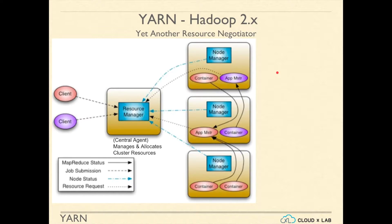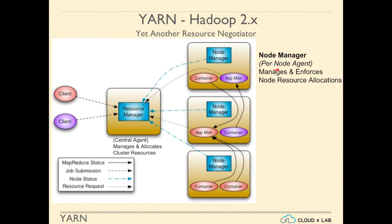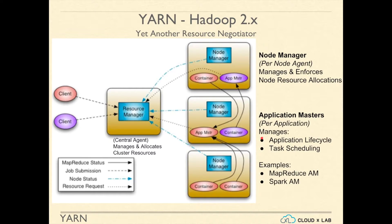Let's try to understand the architecture of YARN. The objective of YARN is to be able to execute any kind of workload in a distributed fashion. All of the components that you see in the diagram are software programs. It has one resource manager. Each machine has a node manager. The node managers create containers to execute programs. Application masters are the programs per application that are executed inside containers. Examples of application masters are MapReduce Application Master and Spark Application Master.